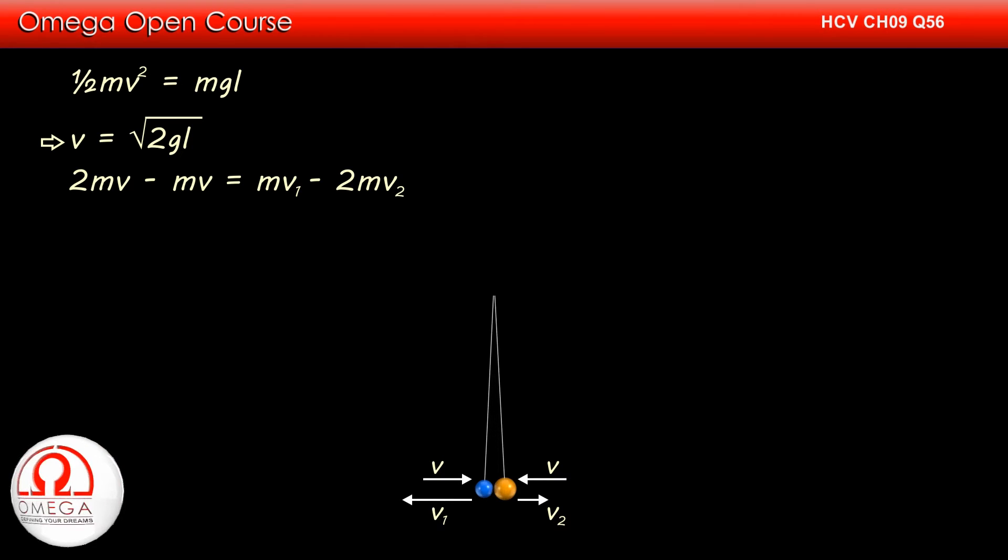As per the law of conservation of momentum, 2mv minus mv must be equal to mv1 minus 2mv2. Dividing both sides by m and simplifying, we get v1 minus 2v2 is equal to v.